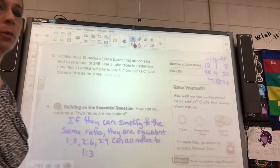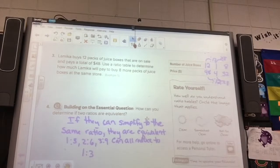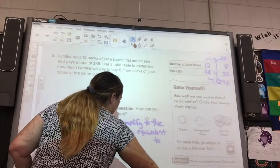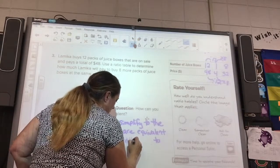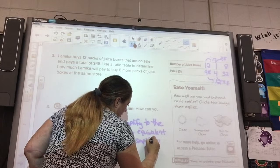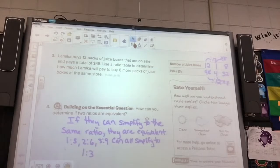All right, take a pause, I know it was in your way to write some of that, take a pause, make sure you have that down. If they can simplify, you know what, I feel like I should write simplify in here instead of reduce, because I feel like using two different words is just not a good idea. If they can simplify to the same ratio, then they are equivalent. 1 third, 2 sixths, and 3 ninths can all simplify to 1 third. That means that they are equivalent.